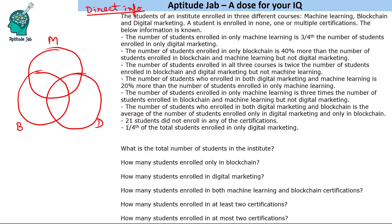I see the number 21 here, so I'll start with this statement: 21 students did not enroll for any of the certifications. I'll put the number 21 outside the circles. Now it says one fourth of the total students enrolled in only Digital Marketing.